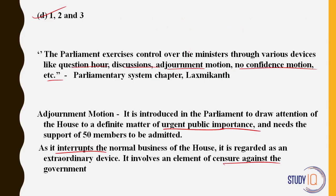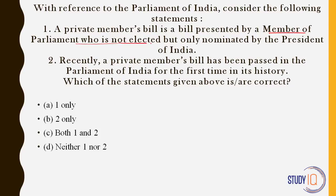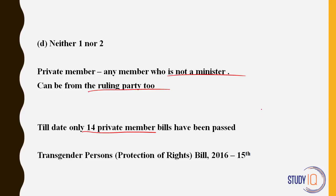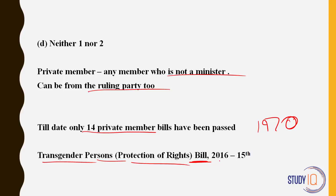With reference to Parliament of India: a private member's bill is a bill presented by a member who is not elected but only nominated by the president — is this true? No. A private member is any member who is not a minister. Everyone apart from ministers is a private member — even ruling party members. Recently a private member's bill has been passed for the first time in history — wrong; 14 bills have been passed, the last one in 1970. Answer is D, neither one nor two. The Transgender Persons (Protection of Rights) Bill was introduced in Lok Sabha in 2016 — the 15th private member's bill. It passed in Rajya Sabha but was still pending in Lok Sabha, which is why this was in news.